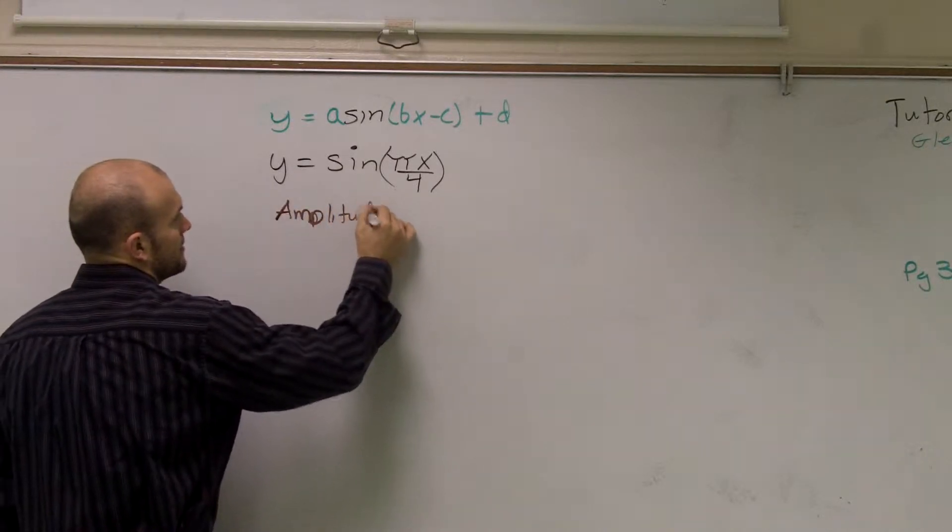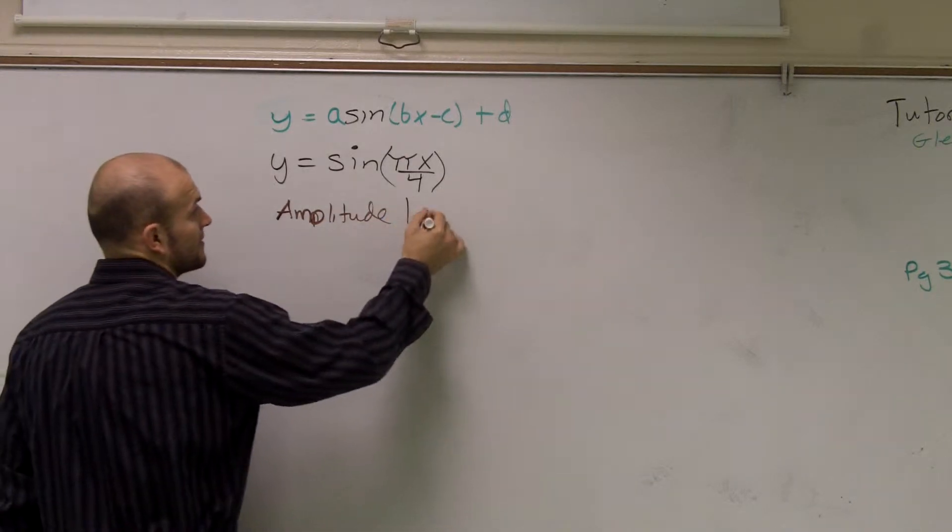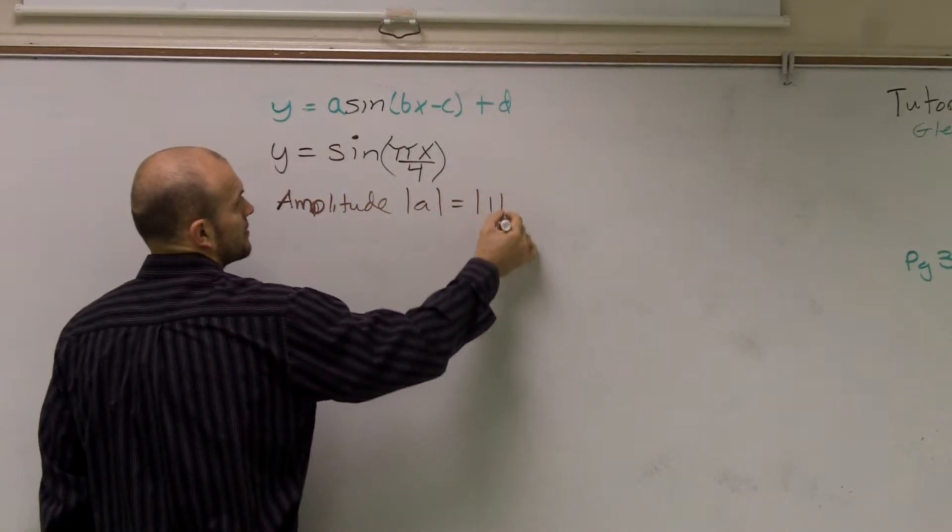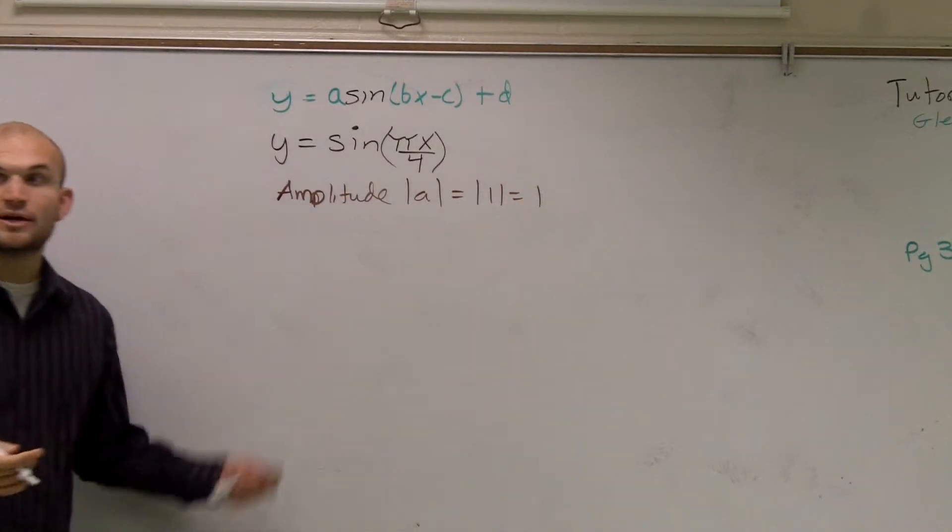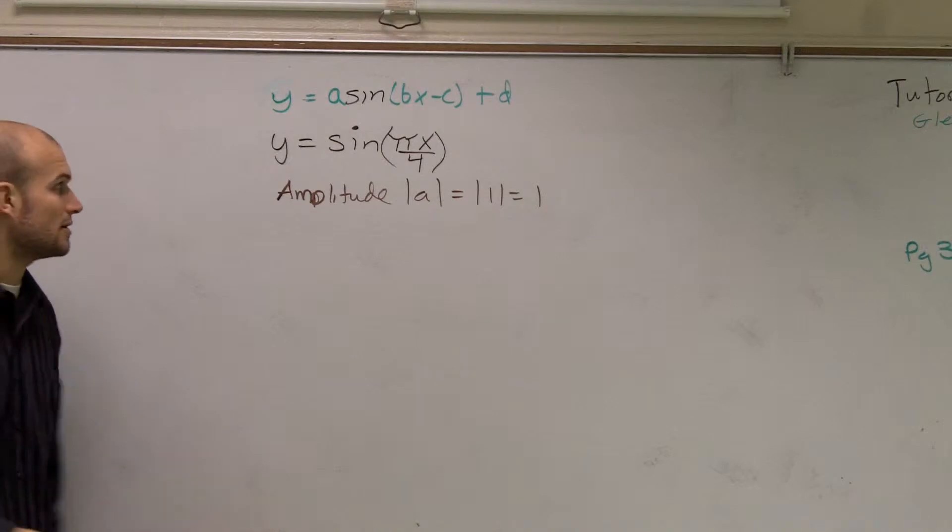Amplitude. That's going to be your A, the number in front of your sine. I don't have a number there, so we know it's going to be 1. Therefore, my graph, the distance from my graph, it's just going to be like the parent function. It's going to go up 1 and down 1.